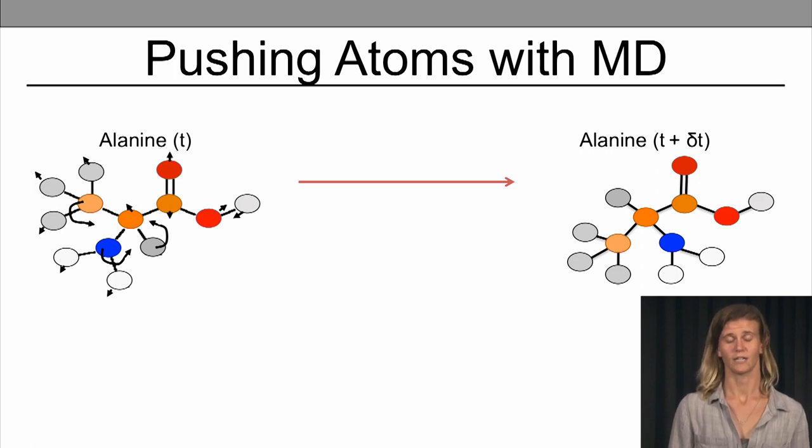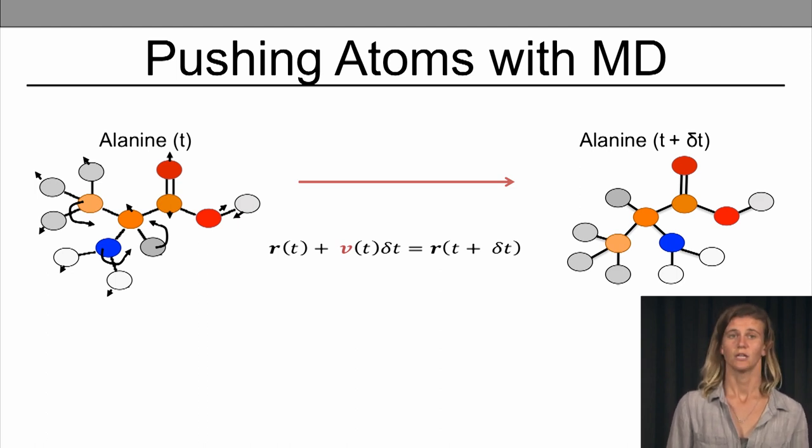What's happening here in a time step of delta T? We're performing molecular dynamics. How did we do this? Essentially, we did Newton's equations of motions. So on the left is R of T, or the position of all the atoms of alanine at time T. And the red arrow here signifies moving those atoms based on the velocity vector V at time T times the delta T, or the change in time. That equals the positions of the atoms at time T plus delta T.